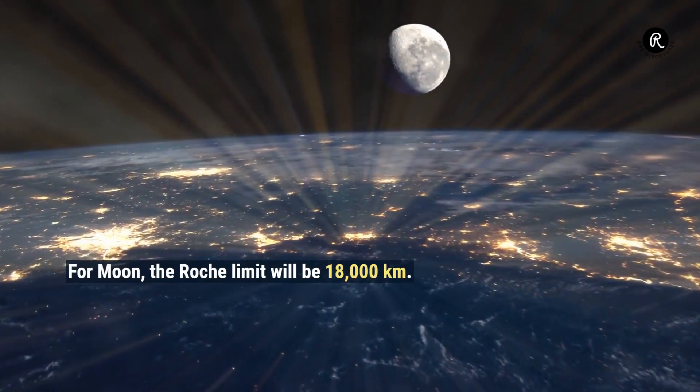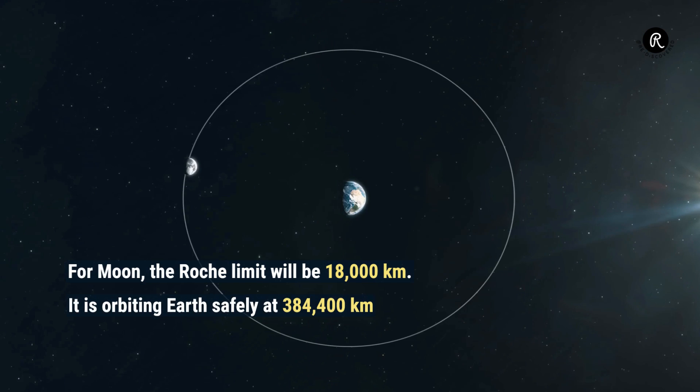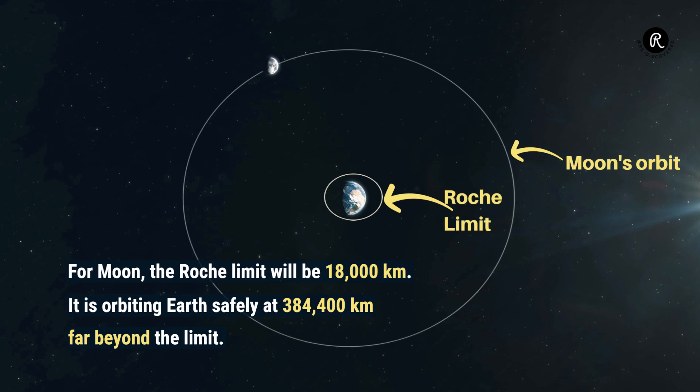For the Moon, the Roche limit will be 18,000 km. It is orbiting Earth safely at 384,400 km, far beyond the limit.